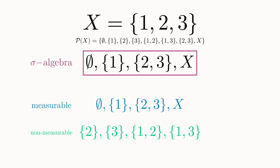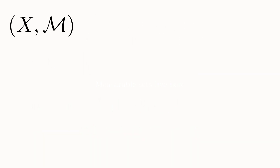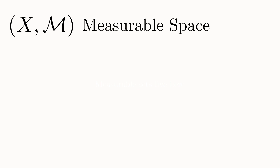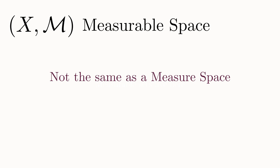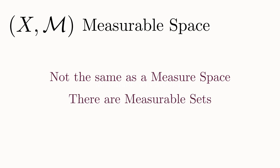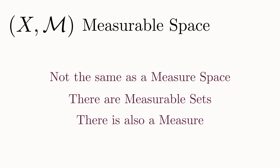Now that we understand what a sigma algebra is, we can move on to the concept of a measure. We assume we have some abstract set x and some sigma algebra M already defined on it. The pair of these items together are called a measurable space, which is slightly different than a measure space. We have measure spaces, measurable spaces, measurable sets, and measures — the terminology can be quite confusing, but don't worry, we'll sort through it all.